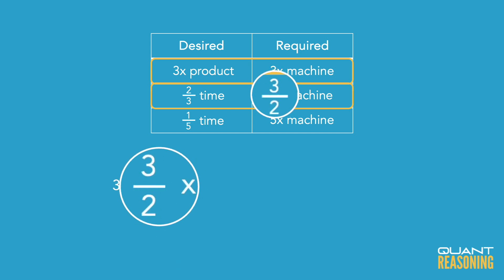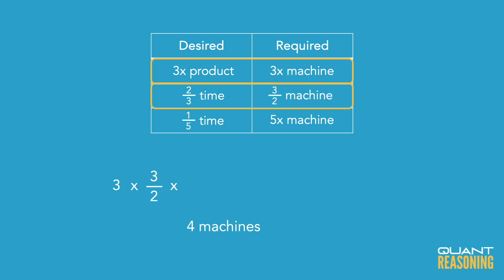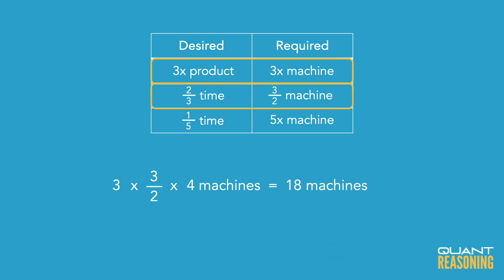So if to begin with we had four machines, what's three times three halves times four machines? That would be nine times two, or 18 machines.